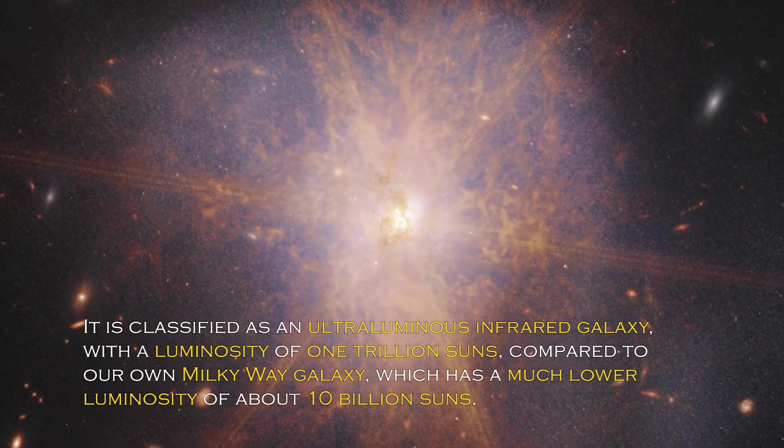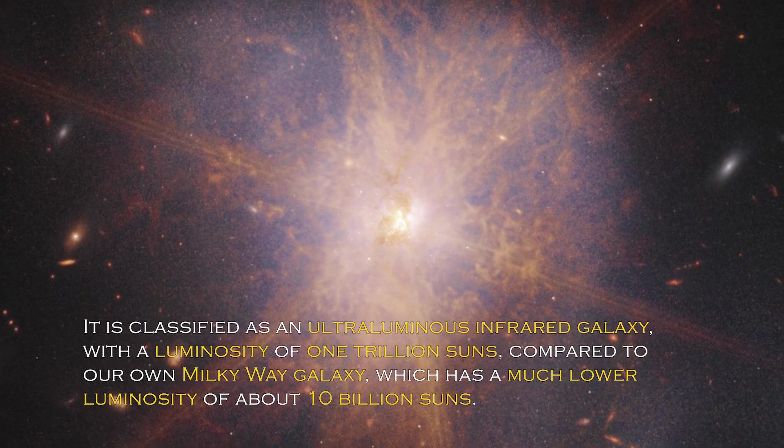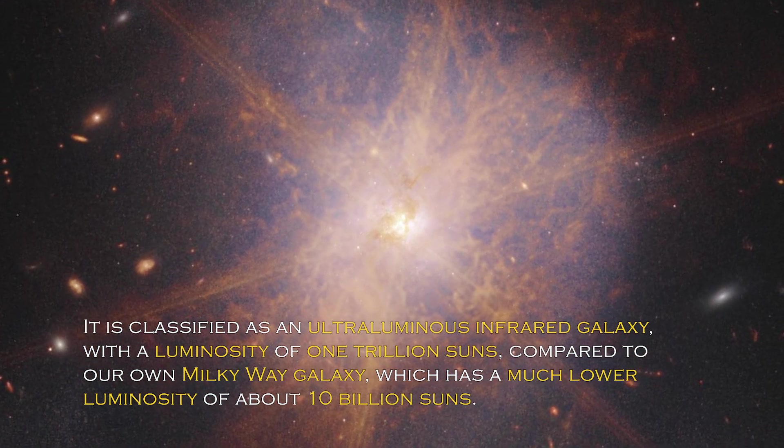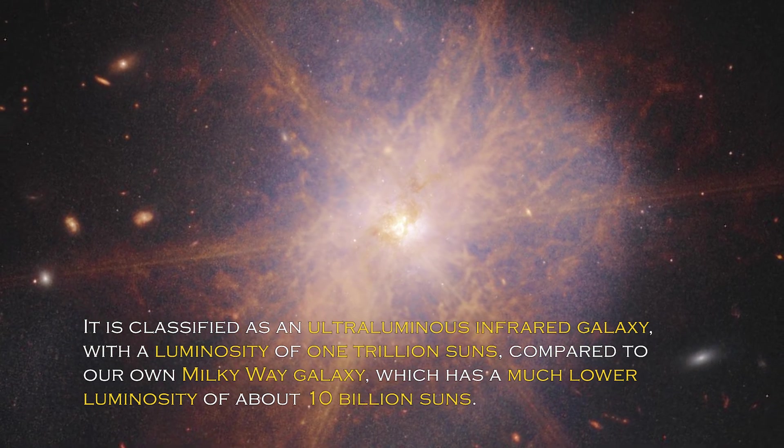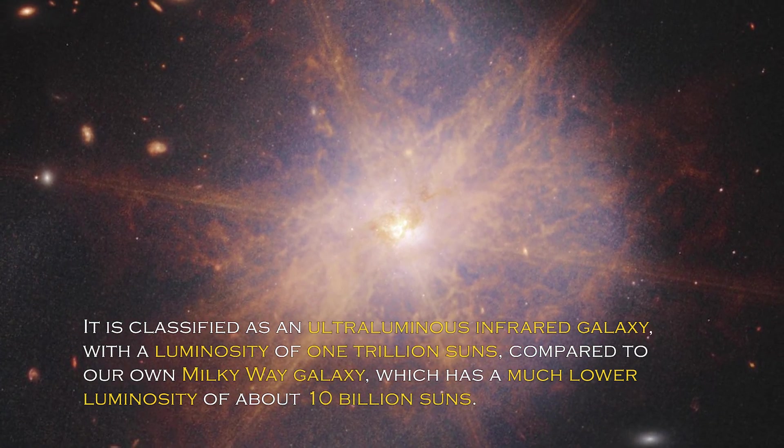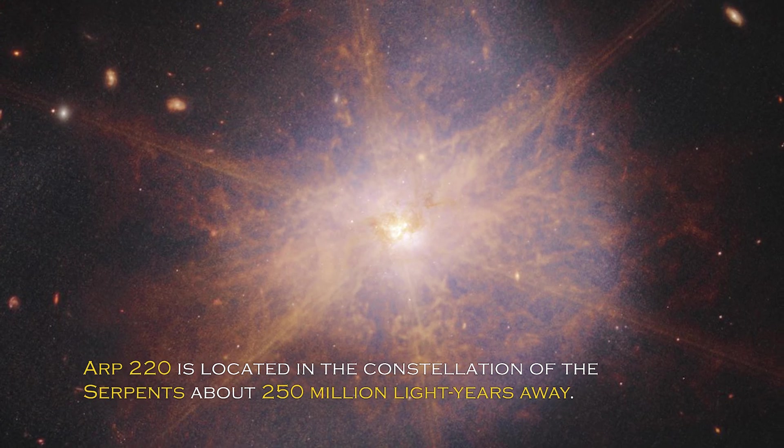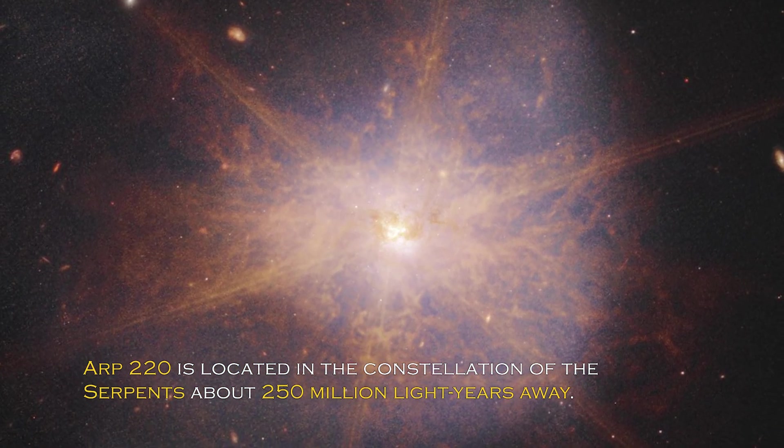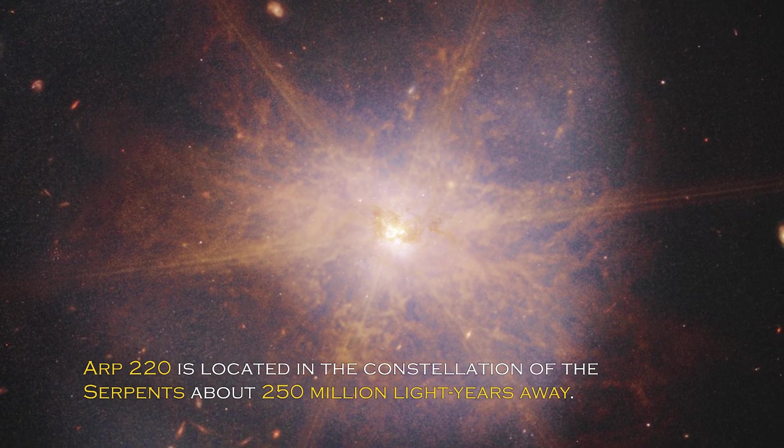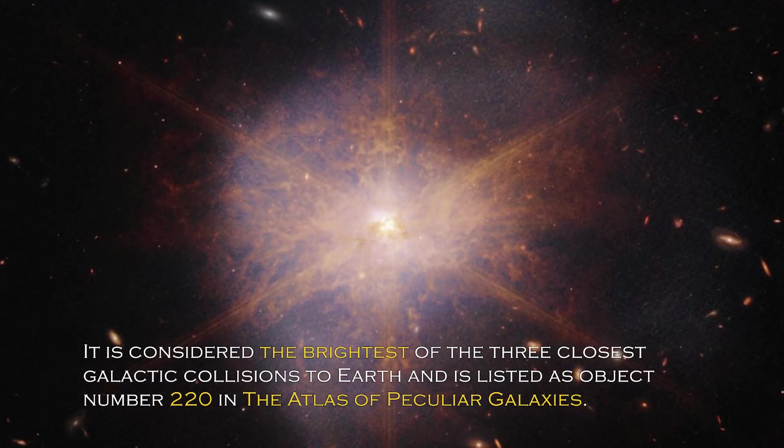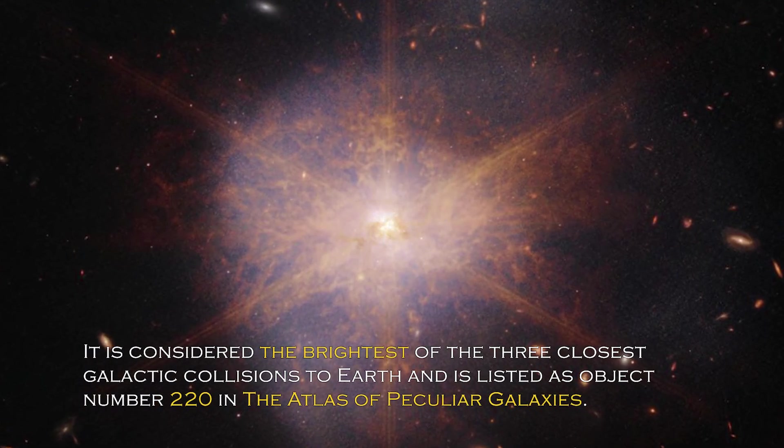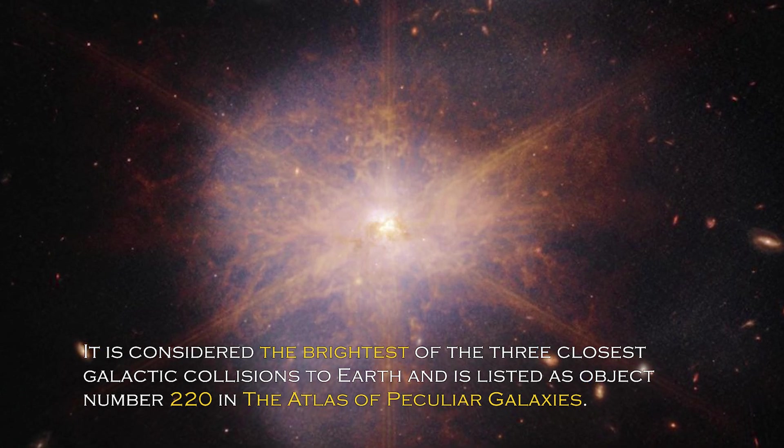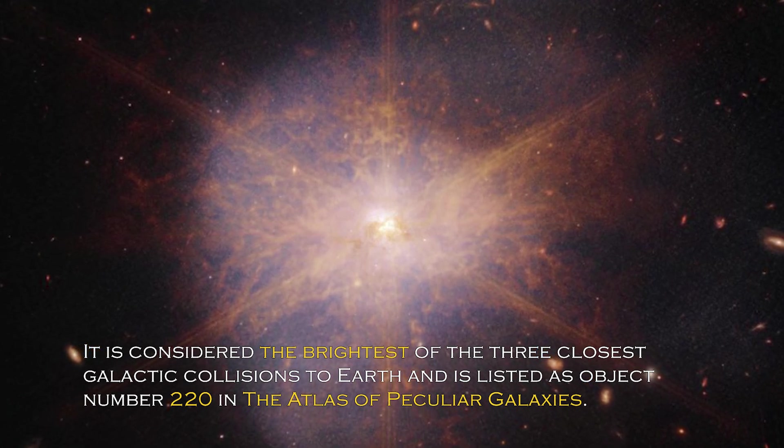It is classified as an ultra-luminous infrared galaxy, with a luminosity of a trillion suns compared to our own Milky Way, which has a luminosity of about 10 billion suns. ARP 220 is located in the constellation Serpens, about 250 million light-years away. It is considered the brightest of the three closest galactic collisions to Earth, listed as object number 220 in the Atlas of Peculiar Galaxies.